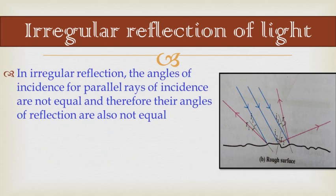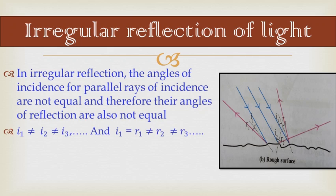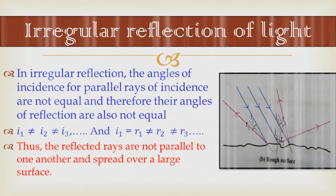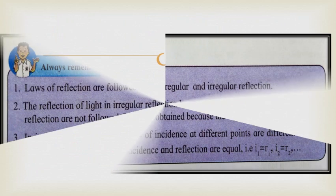In irregular reflection, the angles of incidence for parallel incident rays are not equal, and therefore their angles of reflection are also not equal. So i1 ≠ i2 ≠ i3. While i1 = r1, r1 ≠ r2 and r1 ≠ r3. Thus the reflected rays are not parallel to one another and spread over a large surface.